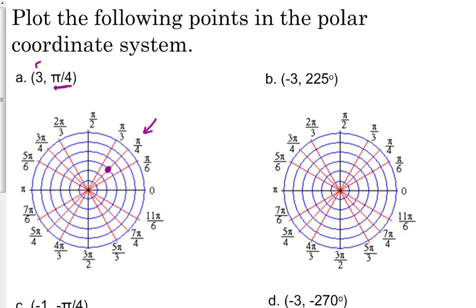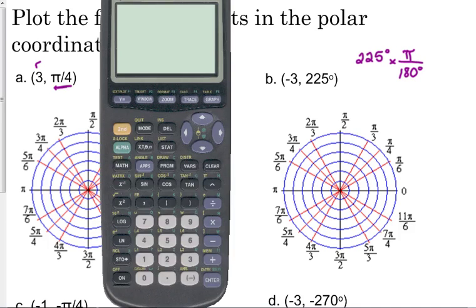Now, on the worksheet that I'm going to give you, if they give you the angle in degrees, they label the polar system in degrees. But on this one, these are all labeled in radians. So if we have degrees, then we've got to find the equivalent angle in radians. So 225, just a reminder, if you need to convert that to radians, we multiply by pi over 180. So 225 over 180 reduces to 5 pi over 4.